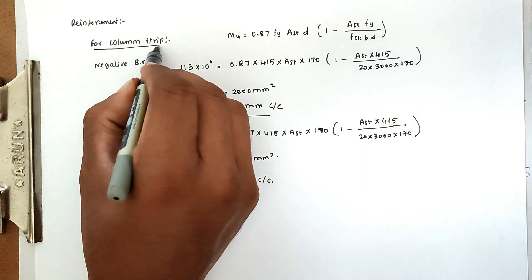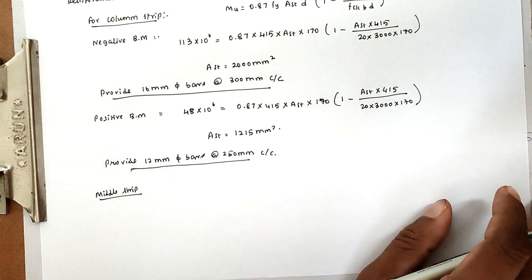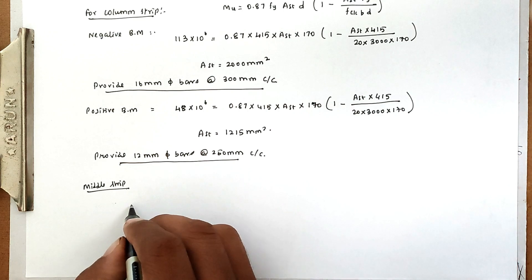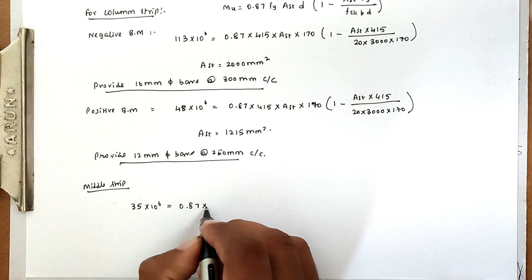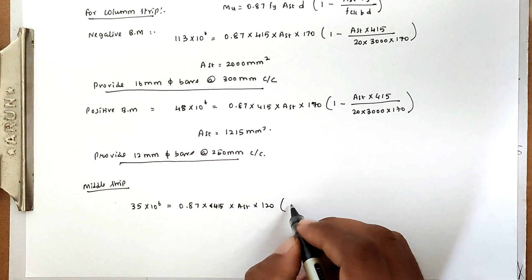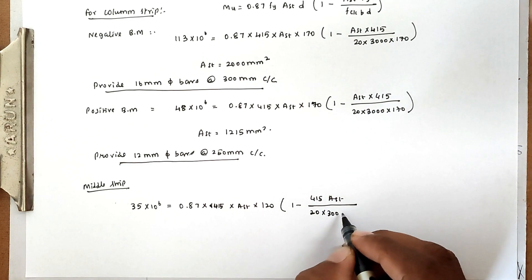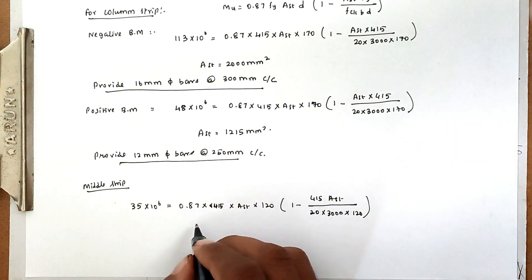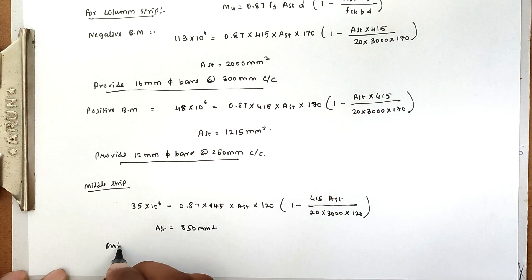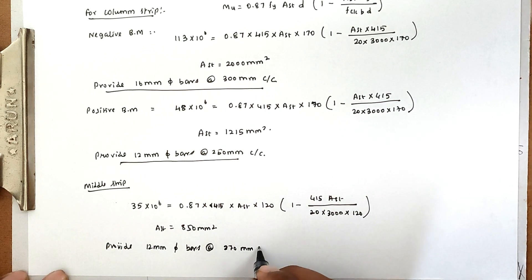For the middle strip, both negative and positive bending moments use the same reinforcement. Substituting MU = 35 into 10^6, Fy = 415, d = 120 mm, Fck = 20, b = 3000: we get AST equals 850 mm². Provide 12 mm diameter bars at 270 mm center-to-center spacing.